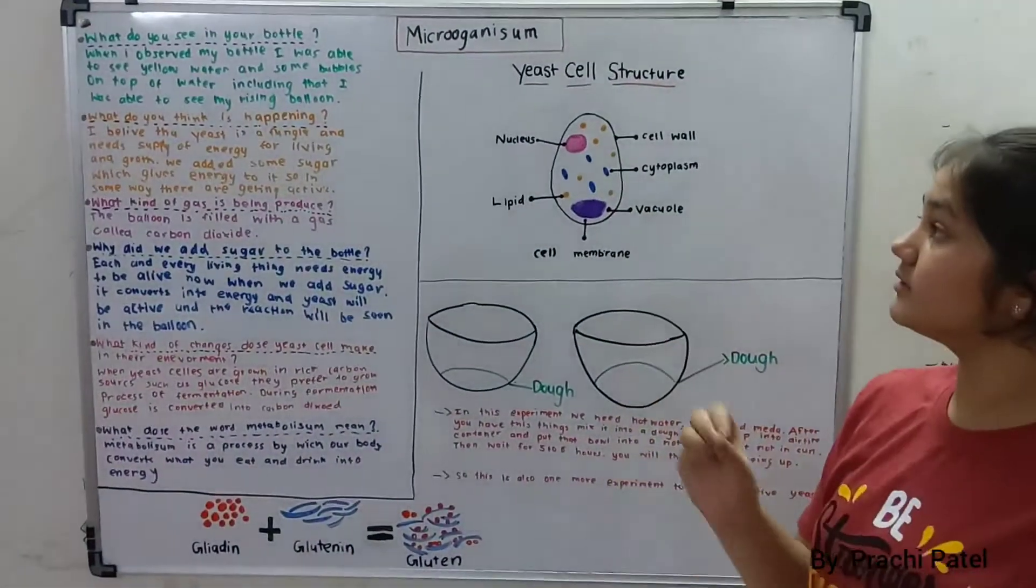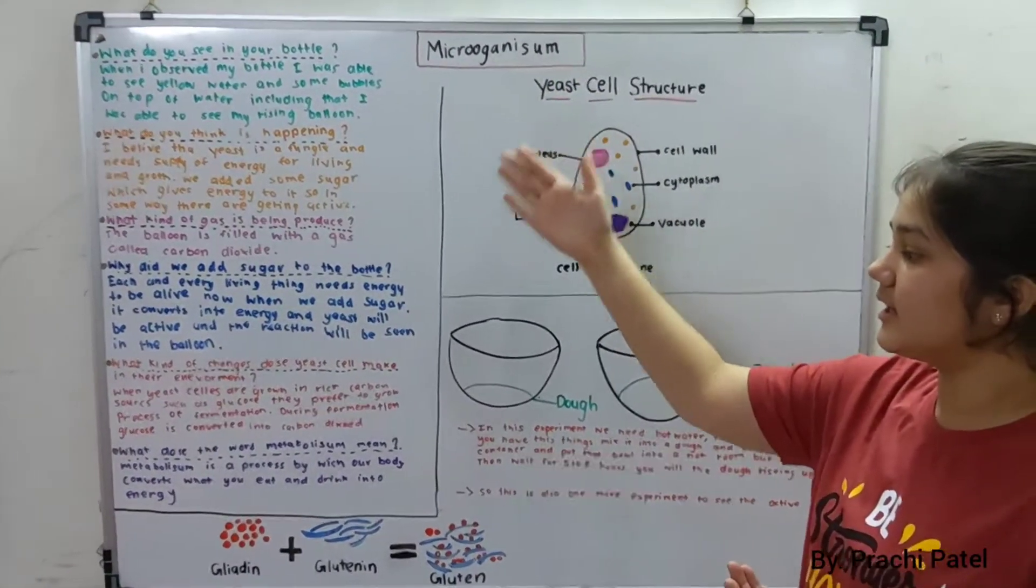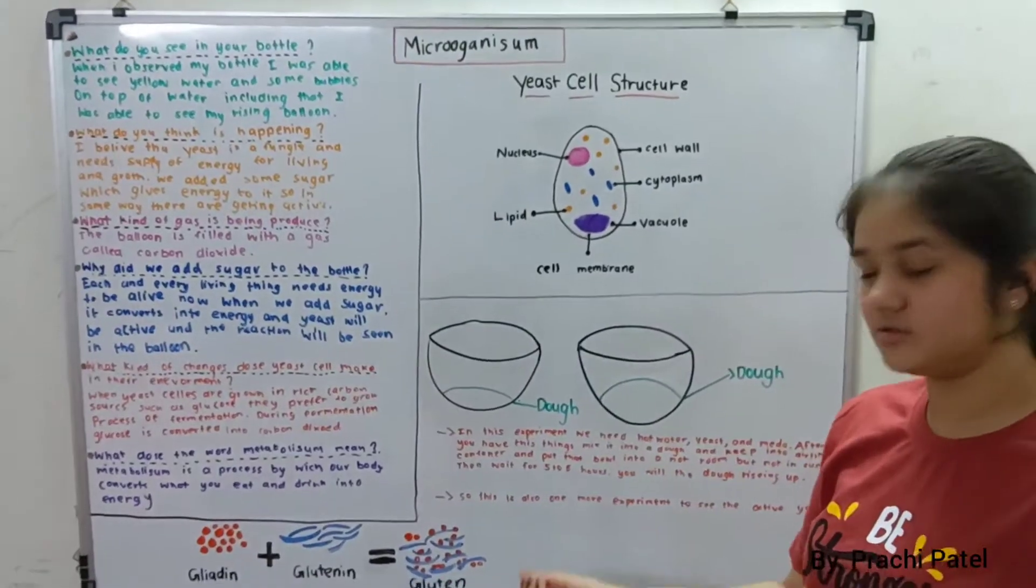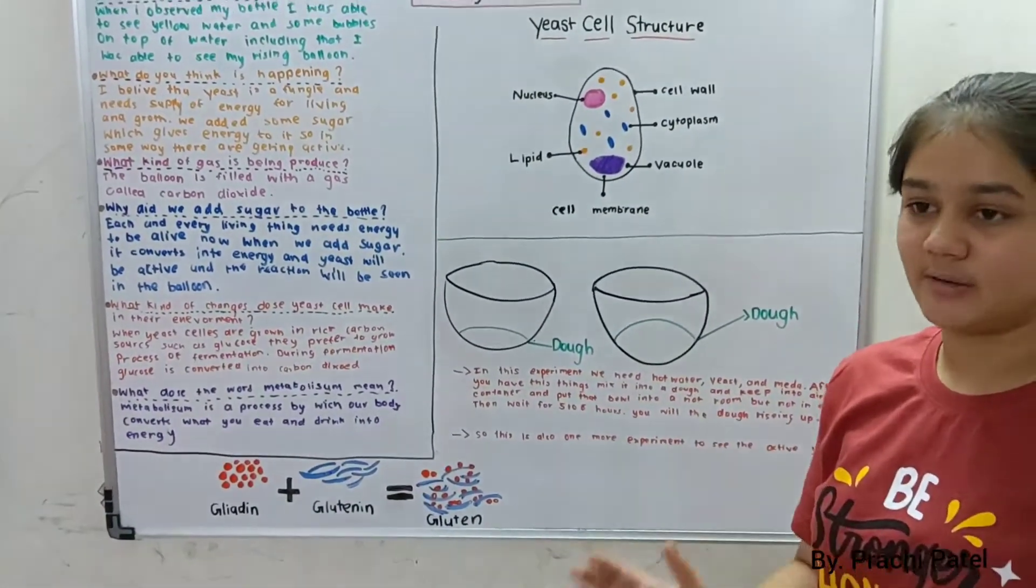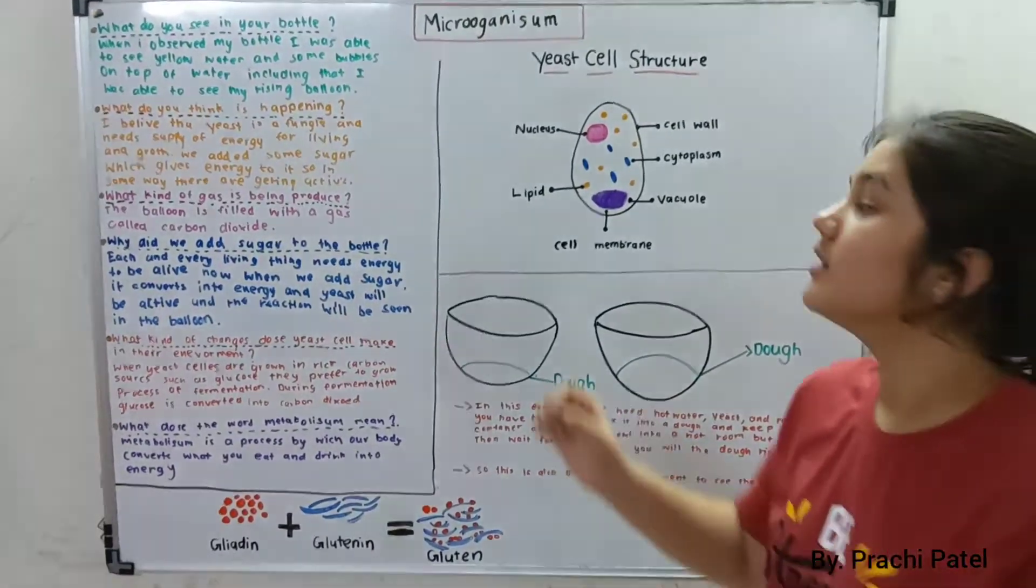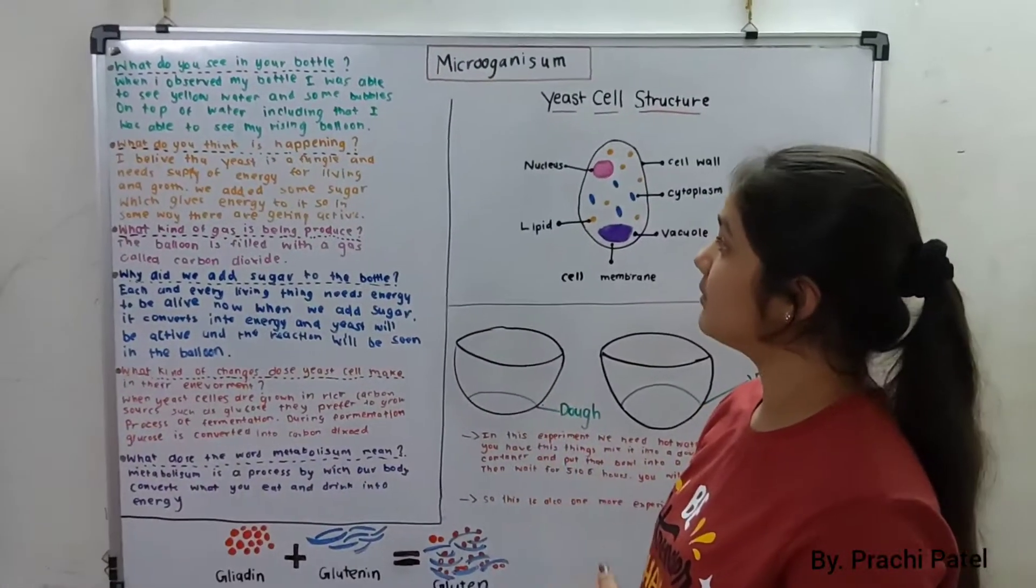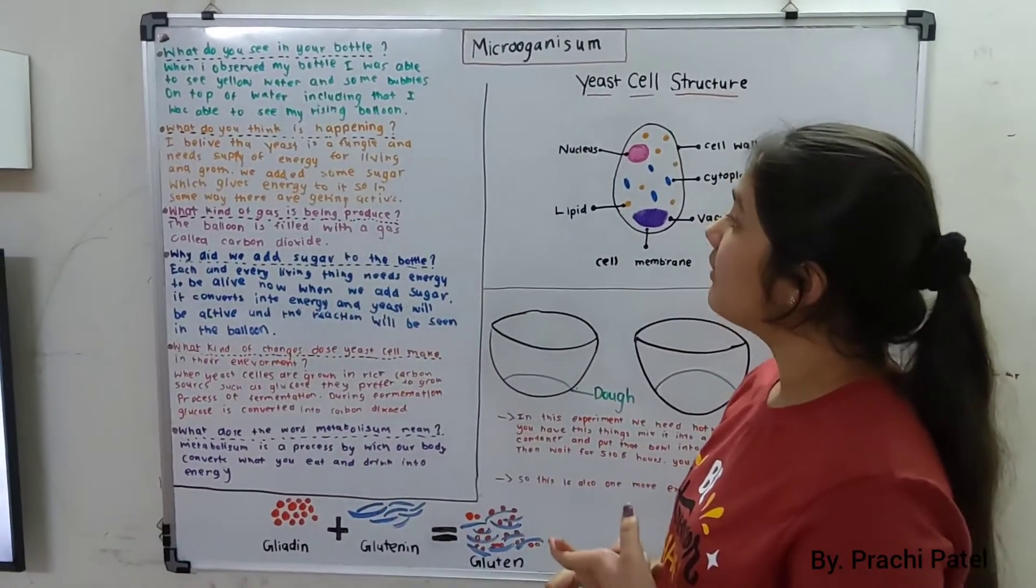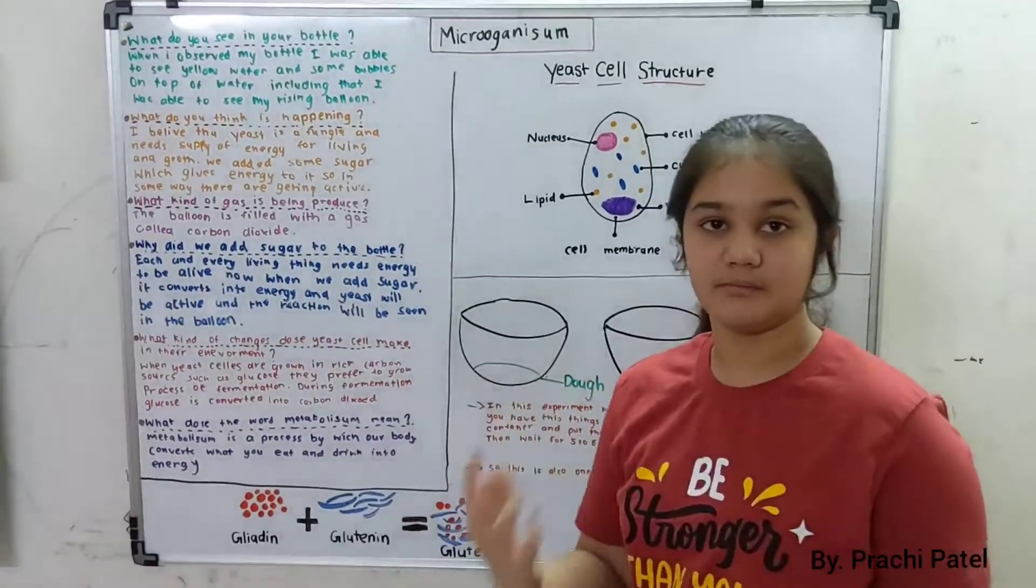Now, what do you see in your bottle? I will write down some questions which relate to this experiment which will help you understand this topic. When I observed my bottle, I was able to see yellow water, some bubbles on the top of water, and I was also able to see my rising balloon.